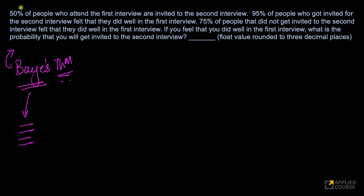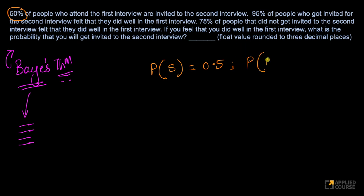Let us try to solve this problem using Bayes' theorem step by step. When writing Bayes' theorem, you have to write conditional probabilities very clearly. From the first fact: probability of being invited to the second interview P(S) = 0.5, and probability of not being invited P(NS) = 0.5, since 50% of people are invited after the first interview.